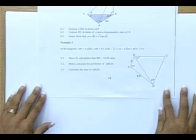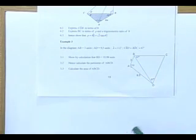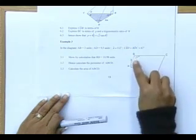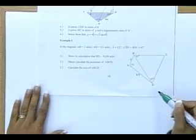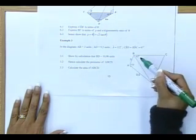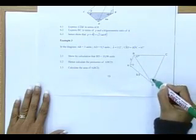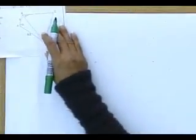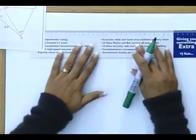I hope that everybody can see this. In the diagram, AB is three units, AD is 9.5 units. My A is 112 degrees. That angle there is 67 degrees, and this angle is 67 degrees. Do you know what I want to do quickly? I want to redraw this diagram for you so that everybody can see it quite clear.